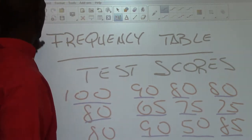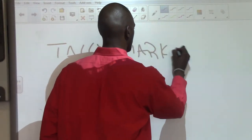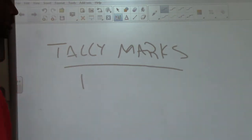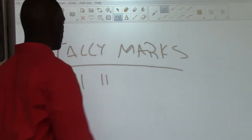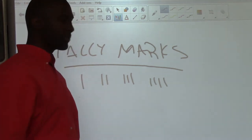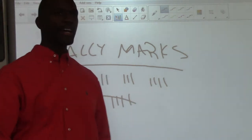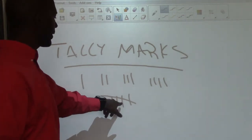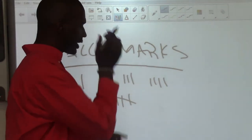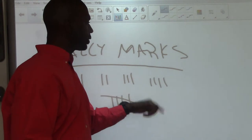The first thing we need to know about a frequency table is that we use tally marks. One line represents one piece of data, two lines represent two pieces of data, and so on. When we take four lines and put a slash through them, that represents five pieces of data. For six, we'd have the five mark and one more; seven is five and two, and so on. Ten would be two five-marks.